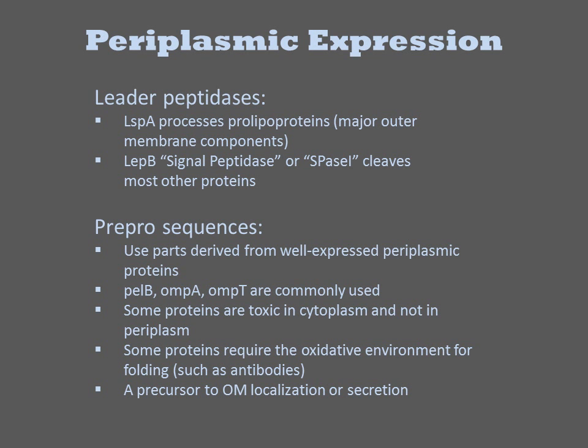To get a protein from the inner membrane to the periplasm, all that is required is cleavage of the sec signal peptide. There are periplasmic proteins called leader peptidases that do this — LSPA and LET-B are two of these. The sequences they act upon are pre-sequences, more specifically called pre-pro, due to the added processing. Rather than design these sequences de novo, it is most common to use ones from well-expressed periplasmic proteins such as PEL-B, OMP-A, or OMP-T.